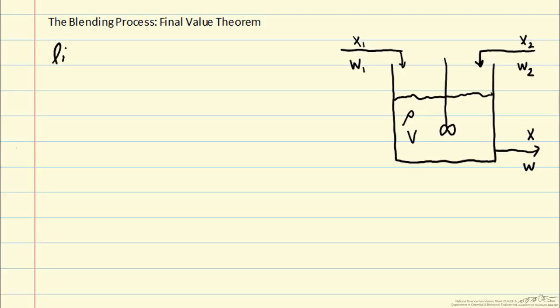So the final value theorem says that we can calculate the limit of y(t) as t goes to infinity as the limit as s goes to 0 of s times y(s), the Laplace transform version. So this means we don't always have to do the inverse Laplace transform in order to learn anything about our system.